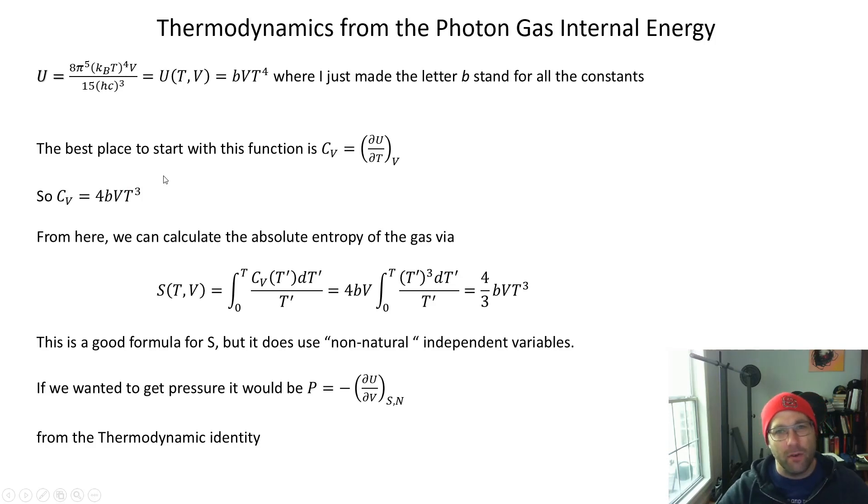If you could measure the heat capacity of the photon gas this would be useful. I'm not aware that anybody ever really measures it. The purpose of calculating CV in this case is that we can then use it to calculate the entropy of the ideal photon gas. We do that with S equals the integral of CV times dT prime over T prime. This is basically dQ over T, and we integrate from absolute zero up to whatever temperature T we care about using the third law of thermodynamics.